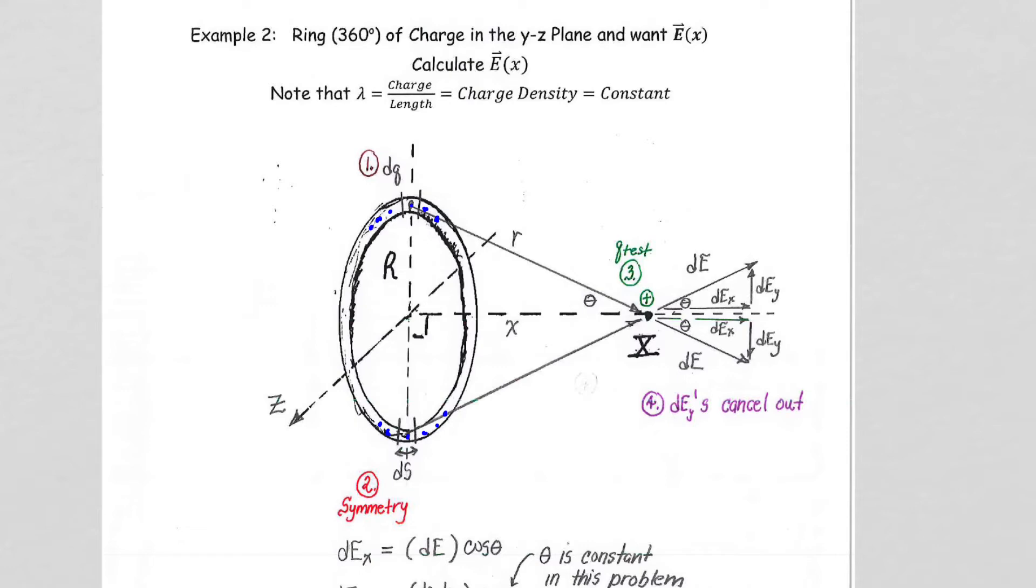What we are being given to consider is the, let me do it in red, is the positive y-axis is here, the positive z-axis is here, so the ring of charge is actually sitting in the y-z plane, and we are being asked to calculate the electric field at a point on the perpendicular bisector through the central axis, so the positive x-axis is here.